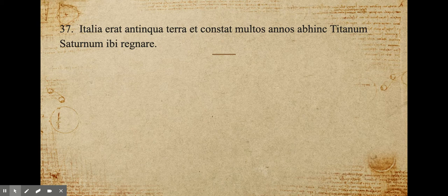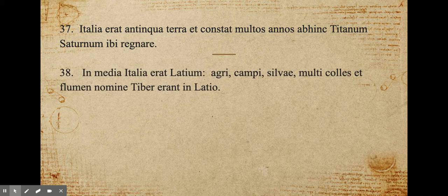Italia erat antiqua terra. It was agreed that for many years ago, the Titan Saturn ruled there. In media Italia erat Latium. Agri, campi, silvae, multi colles, et flumen nomine Tiberis erant in Latio. Fields and open spaces, forests and many hills, and a river named Tiber were in Latium.